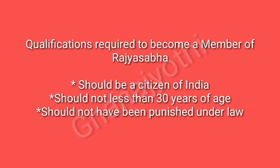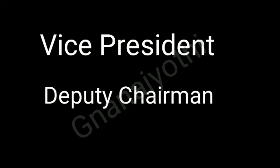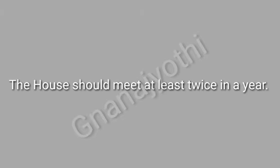Now let us observe the qualifications required to become a member of Rajya Sabha. First, one should be a citizen of India. Second, one should not be less than 30 years of age. Third, one should not have been punished under law. The Vice President is the Chairman of the Rajya Sabha. The Deputy Chairman is chosen from among the members. The house should meet at least twice in a year.